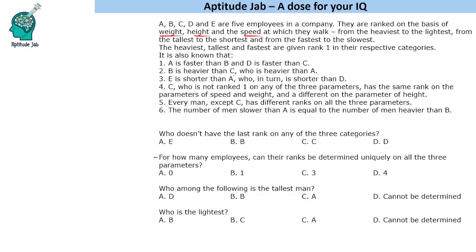Browsing through the statements: statement one says A is faster than B and E, so it talks about speed. Statement two talks about B's weight. Statement three says E is shorter, talking about height. Statement four talks entirely about person C. Statement five gives a special condition that every man has different ranks on the three parameters, except C.